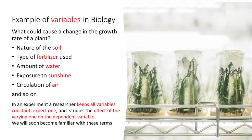Let us take an example in biology. What could cause a change in the growth rate of a plant? The nature of the soil, type of fertilizer used, amount of water, exposure to sunshine, circulation of air, and so on — these are the variables that affect growth. In an experiment, a researcher keeps all variables constant except one, and studies the effect of the varying one on the dependent variable.